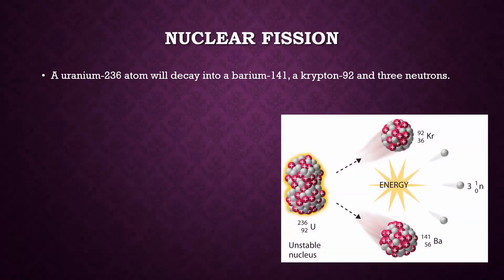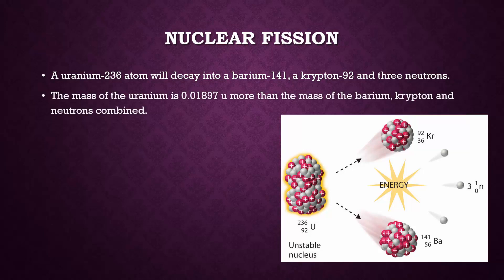A uranium-236 atom will decay into a barium-141, a krypton-92, and three neutrons. The mass of the uranium is 0.01897 universal mass units more than the mass of the barium, krypton, and neutrons combined.